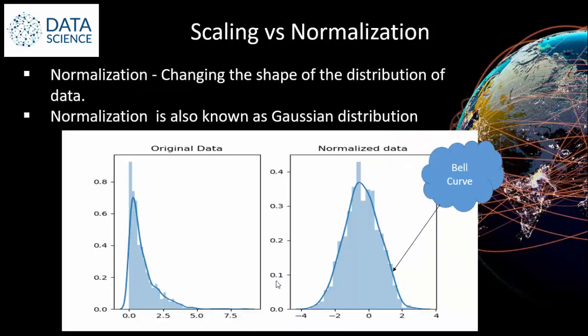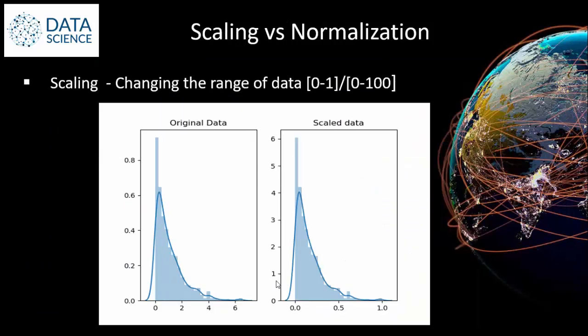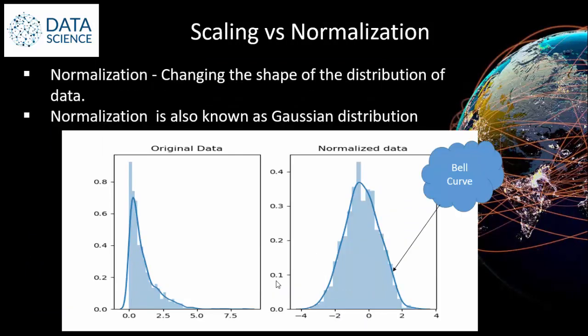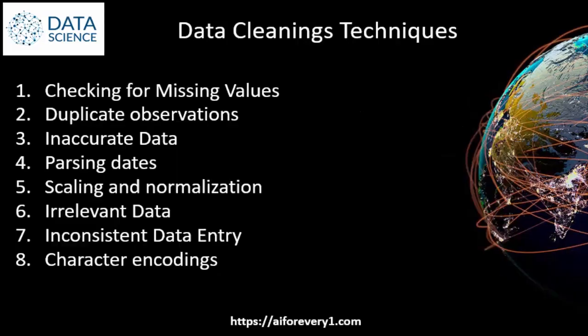For now, the takeaway is: scaling means changing the range of data, and normalizing means changing the shape of the distribution of data. If you remember these two points, it is more than enough. That's the end of this video. In the next video we will see the remaining topics. Thanks for watching. Happy learning.